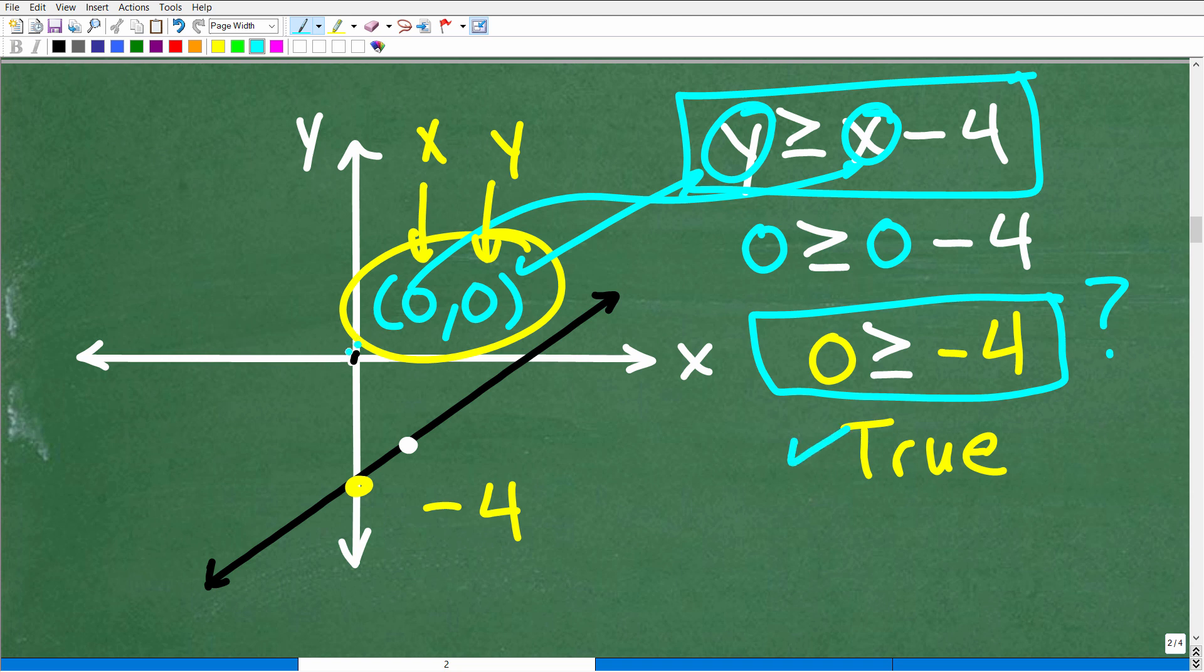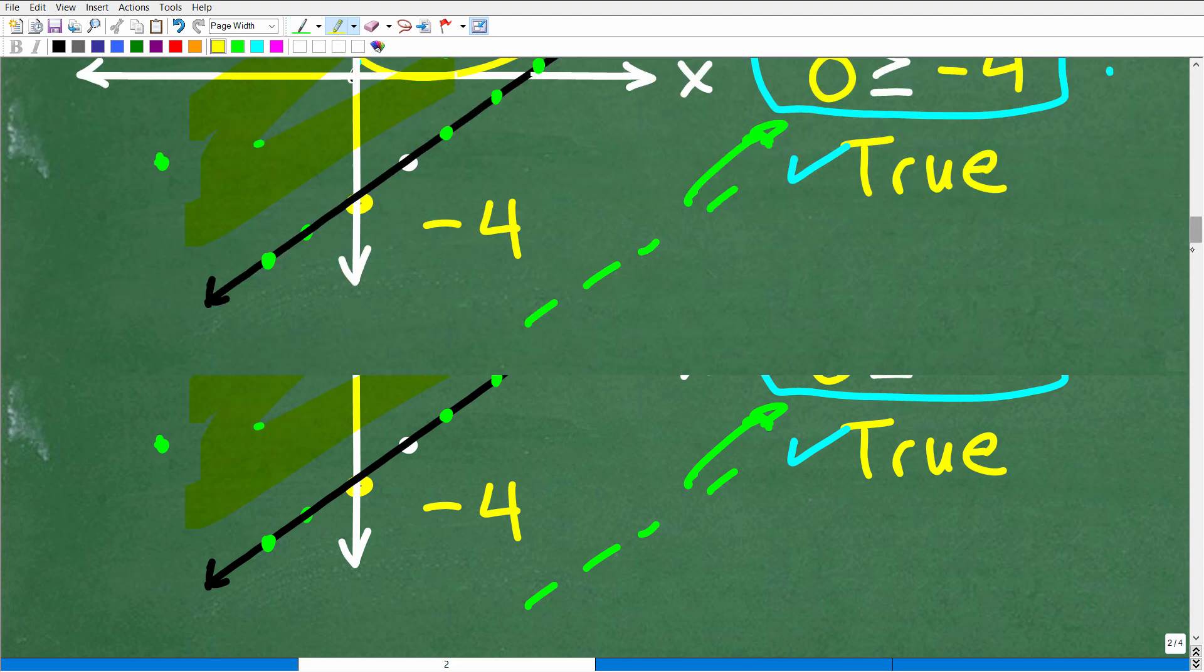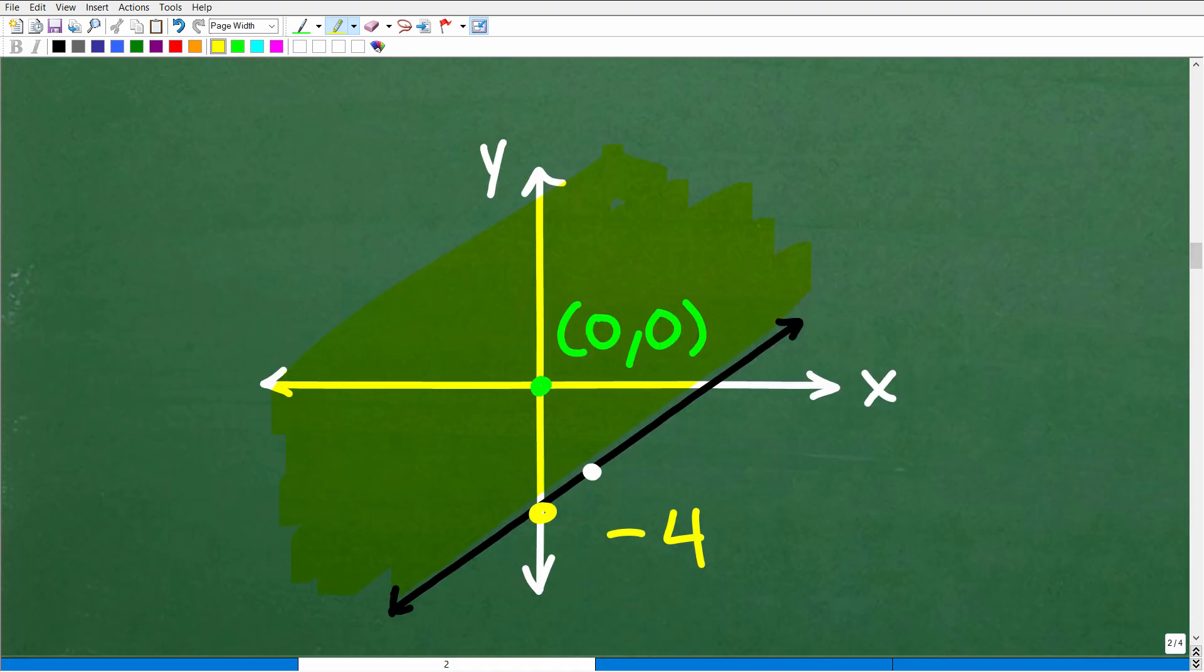This point here represents a true statement, which means that any point, any XY point on this side of the line will produce a true statement as well. And now let's kind of go back to the solid line. So what the solid line means is that any point that's actually on the line will also produce a true statement. So if it's a dashed line, points that are on that line are not part of the solution set. Okay, so the final step here is just to shade this side of the line. That's what we call the solution region.